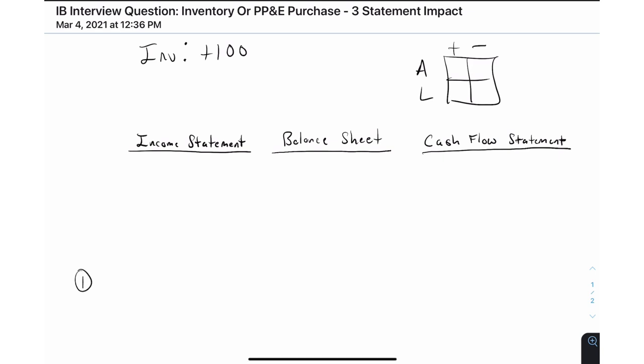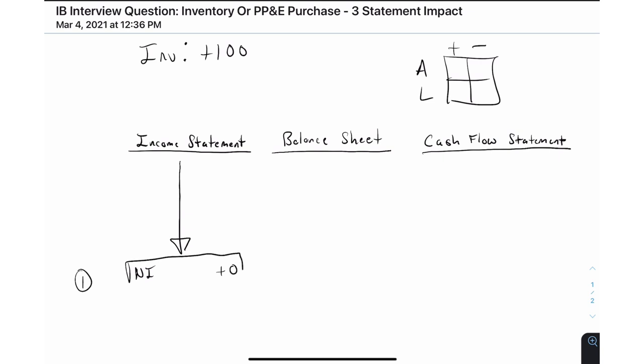The key thing to capture here with the income statement in this type of question is that there is actually no income statement impact. Until a good or service has been sold — which is what that inventory will turn into — it doesn't hit the income statement. That's really the core function of accrual accounting. So the income statement impact is zero, because we haven't yet sold the product. That's actually why people ask this question — to see if you understand it doesn't hit the income statement until it's sold.